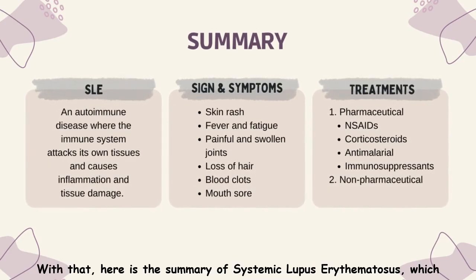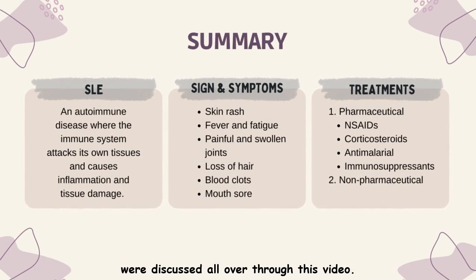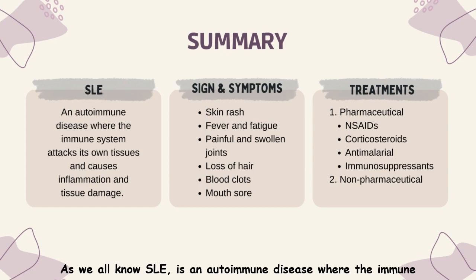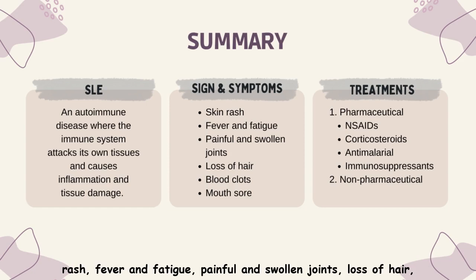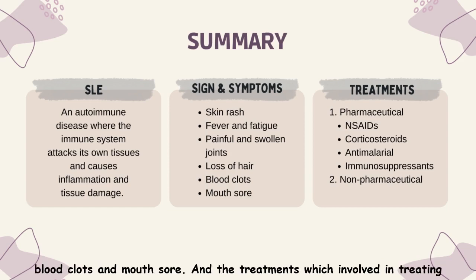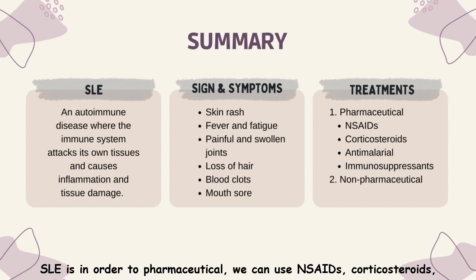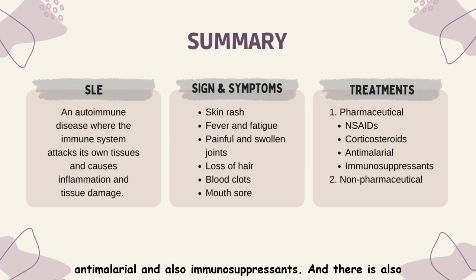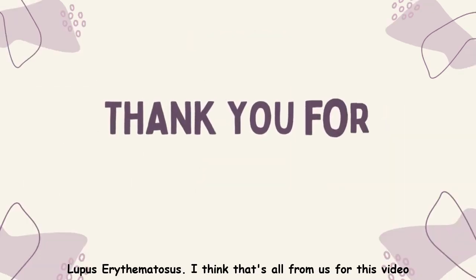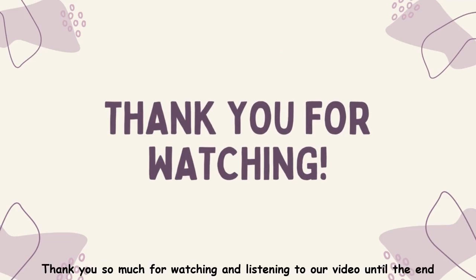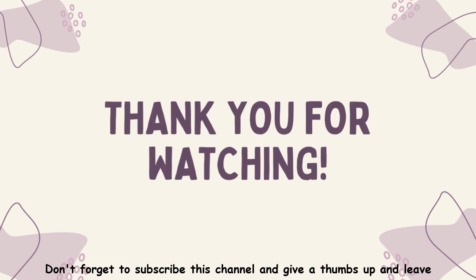With that, here is the summary of systemic lupus erythematosus discussed throughout this video. SLE is an autoimmune disease where the immune system attacks its own tissues, causing inflammation and tissue damage. The most common signs and symptoms of SLE include skin rash, fever, fatigue, painful and swollen joints, hair loss, blood clots, and mouth sores. Treatments include pharmacological options such as NSAIDs, corticosteroids, antimalarials, and immunosuppressants, as well as non-pharmacological approaches. Thank you so much for watching and listening to our video until the end. Don't forget to subscribe, give a thumbs up, and leave your comment below.